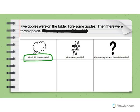So let's read the problem. Five apples were on the table. I ate some apples. Then there were three apples. So what is the situation about? We have apples on a table and some of them get eaten.